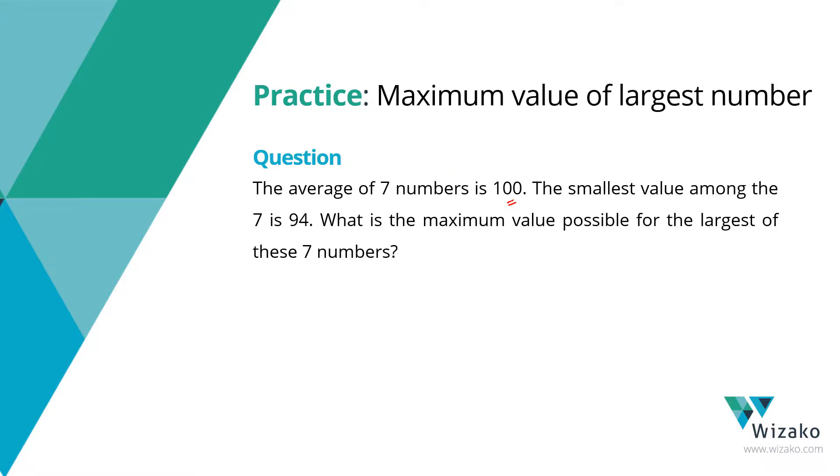The average of 7 numbers is 100. The smallest value among the 7 is 94. What we need to compute is the maximum value possible for the largest of these 7 numbers.